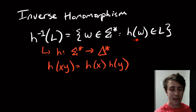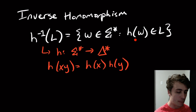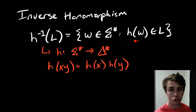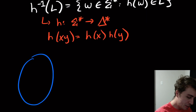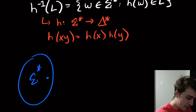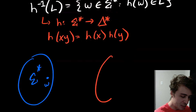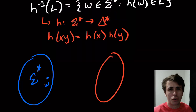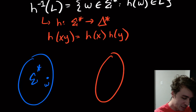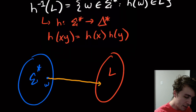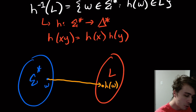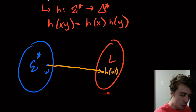We can think of h in terms of its individual characters — we apply h to individual characters and then string them all together. That's the peculiar property of morphisms. With inverse homomorphisms, we have all the strings in L that can be reached by some string in Σ* via the h function. So if we have Σ* here and w is a point in it, then L is a subset of Γ*, and w maps to h(w) over in Γ*.